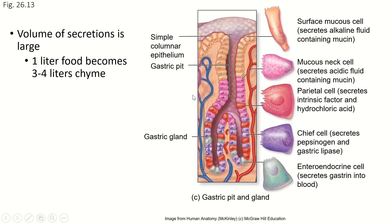Your digestive system is not just digesting the food you ate — it's also recycling the things it uses to digest the food. It's a really efficient system. Most of the material absorbed by the intestines was actually created by the GI tract itself, because only one liter of this is food while two to three liters of it are secretions.